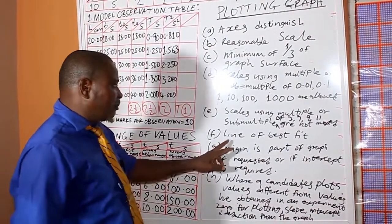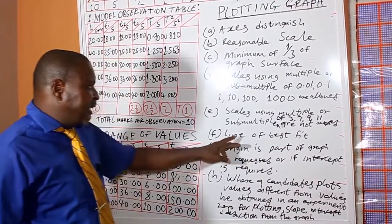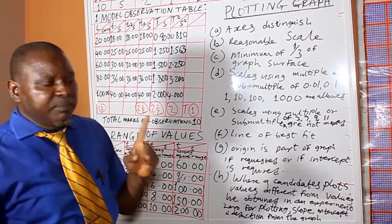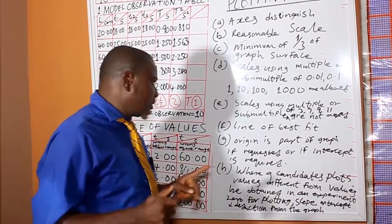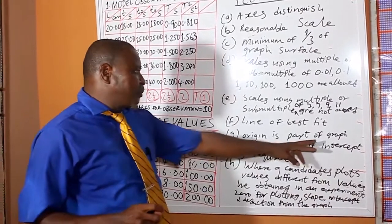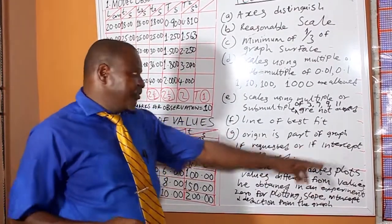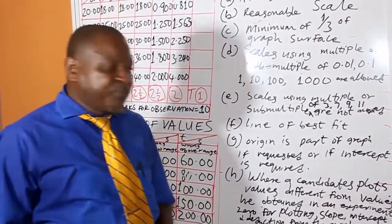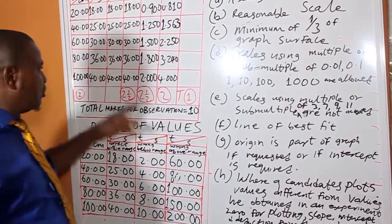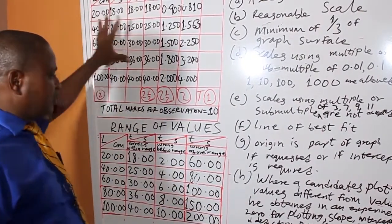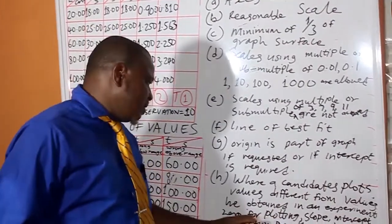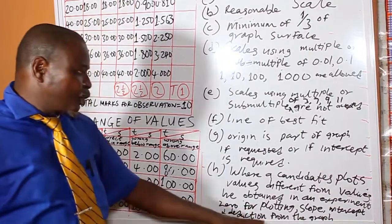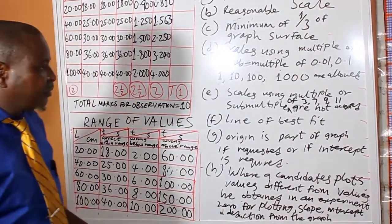Line of best fit. Before a candidate can get the mark for line of best fit, he must get the battery point plot correctly. Origin is part of graph, if required, or if intercept is required. When handling plot values different from the values he obtained in the table, he will get zero for plotting. He will get zero for slope, intercept, deduction, and deduction from the graph.